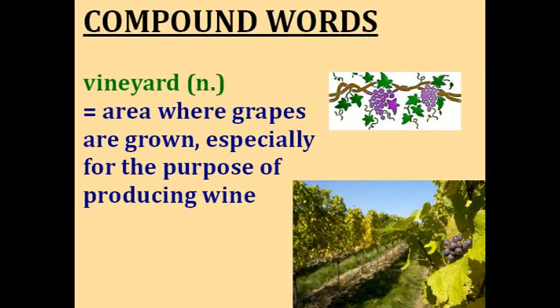Vineyard. A vine is a type of plant that climbs up a surface as it grows — grapes grow on vines. A yard is an area of land. So a vineyard is an area where grapes are grown, especially for the purpose of producing wine.